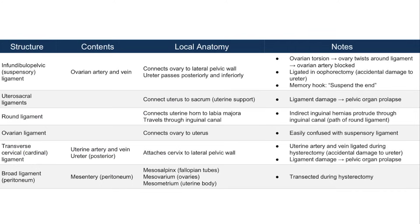This is a table with the major ligaments associated with the female reproductive organs. Let's start our discussion with the infundibulopelvic ligament, which is also called the suspensory ligament. It's important to recognize that this structure connects the ovary to the lateral pelvic wall, and therefore it suspends the ovary, hence the term suspensory ligament.